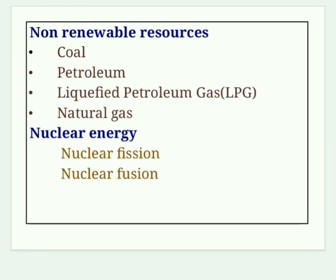Nuclear energy was discovered due to rapid industrialization, rising living standards and population explosion depleting fossil fuels. It is produced by two types of reactions: nuclear fission — splitting of a heavy nucleus into two or more smaller nuclei with simultaneous release of large amounts of energy; and nuclear fusion — when lighter nuclei fuse together to form a bigger nucleus. Nuclear power plants in India include Tarapur Atomic Power Station in Maharashtra, Udangulam and Madras Atomic Power Station in Tamil Nadu, and Narora in Uttar Pradesh.